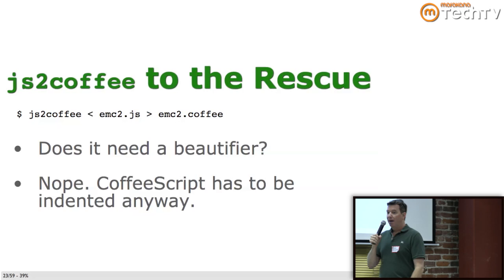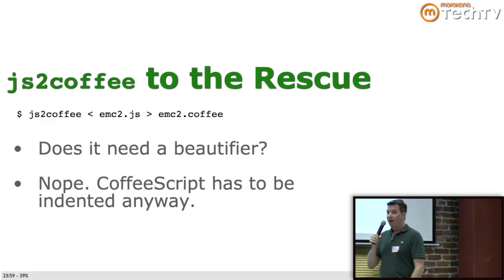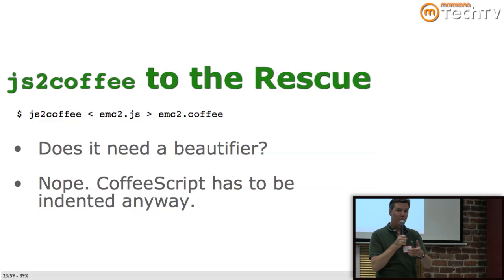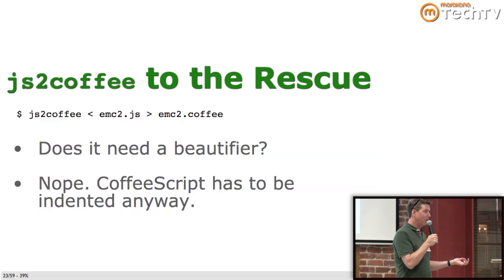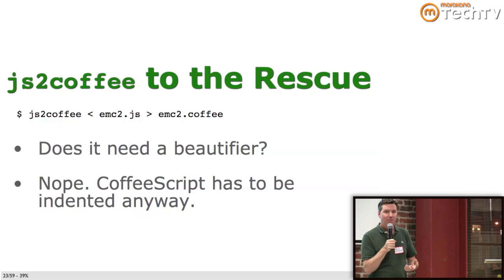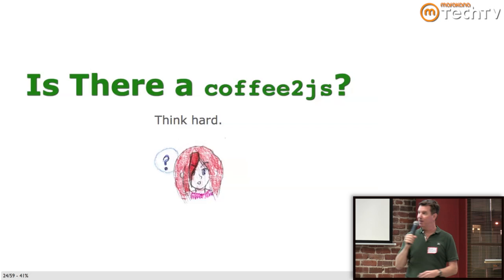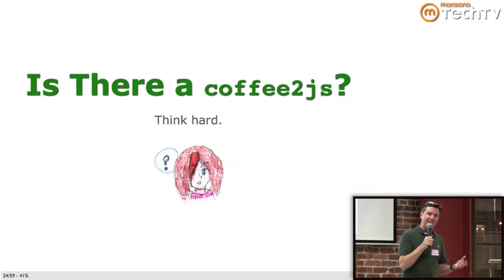Dealing with legacy JavaScript: js2coffee is pretty good. You give it an input JavaScript file and an output .coffee name, and it works. Does it need a beautifier? No, because CoffeeScript is like Haml or Python — whitespace is significant — so js2coffee has to pretty-print it for the CoffeeScript to actually work. It looks pretty nice after it's done. And is there a Coffee to JS? Well, what is CoffeeScript? It's a language that compiles to JavaScript. So CoffeeScript itself is Coffee to JS.